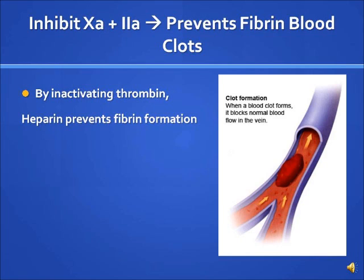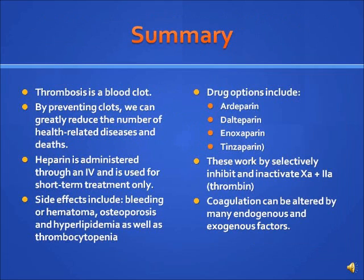Inhibiting factor 10a and 2a prevents fibrin blood clots. By inactivating thrombin, heparin prevents fibrin blood clot formation. Thrombosis is a blood clot; by preventing clots, we can greatly reduce the number of health-related diseases and deaths. Heparin is administered through an IV and is used for short-term treatment only. Side effects include bleeding or hematoma, osteoporosis, hyperlipidemia, and thrombocytopenia. Drug options include ardeparin, dalteparin, enoxaparin, and tinzaparin, which work by selectively inhibiting and inactivating factor 10a and 2a. Coagulation can be altered by many endogenous and exogenous factors.